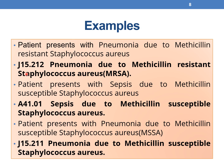Examples: The appropriate code for pneumonia due to Methicillin-resistant Staphylococcus aureus is J15.212. For sepsis due to Methicillin-susceptible Staphylococcus aureus, the code is A41.01. For pneumonia due to Methicillin-susceptible Staphylococcus aureus, the code is J15.211. Whenever a combination code is available, assign only one code and do not use B95.62 or Z16.11.